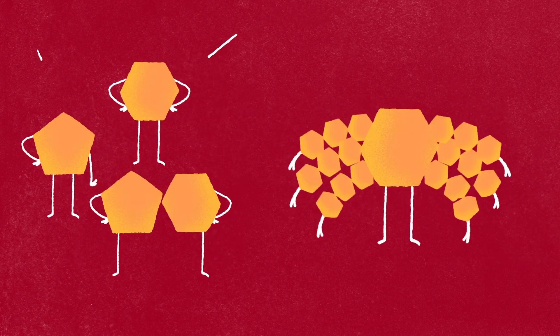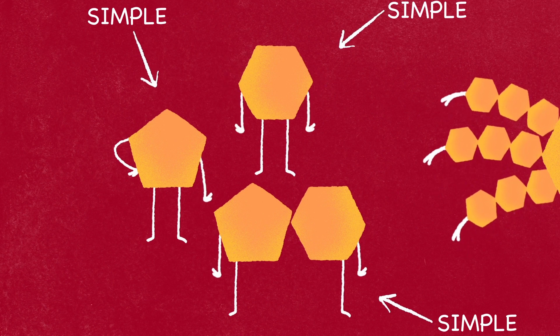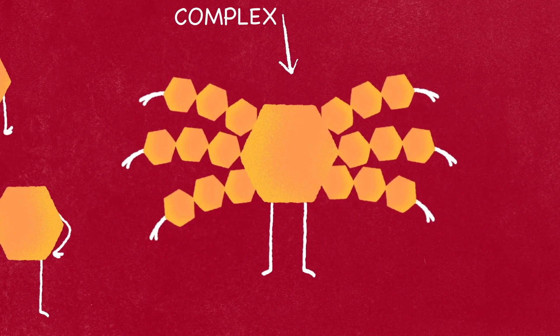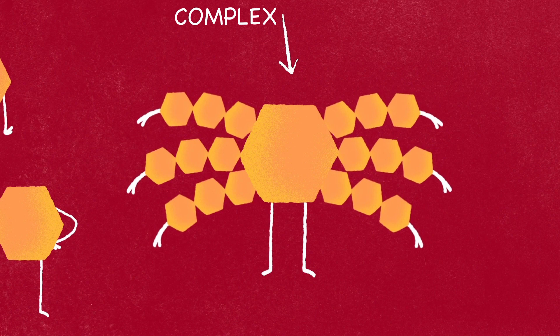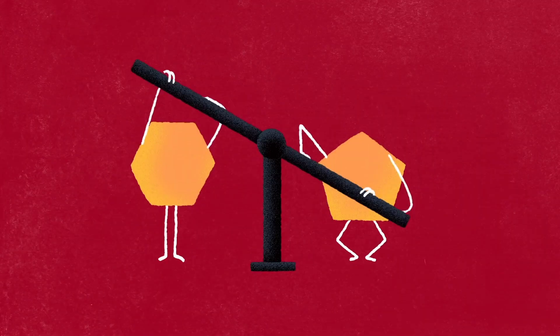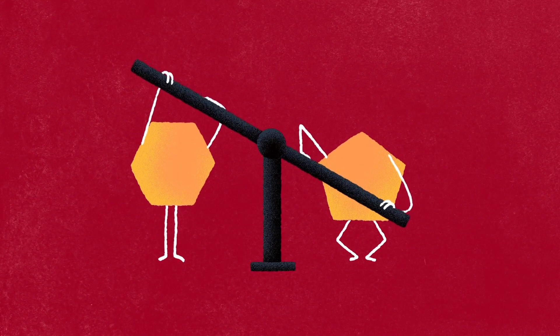Carbohydrates are simple carbohydrates or sugars, such as glucose or fructose, and complex carbohydrates such as starch. Their main role is to provide energy.